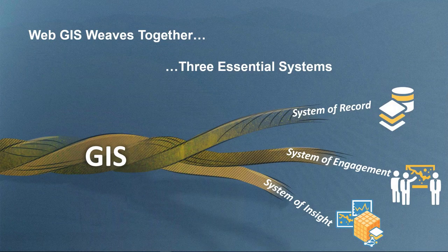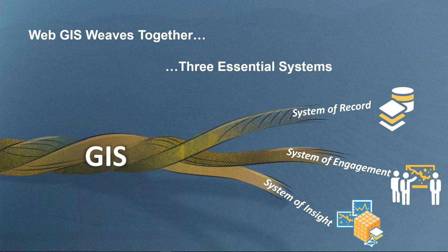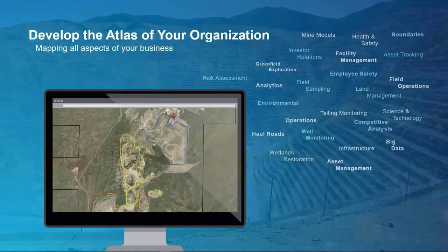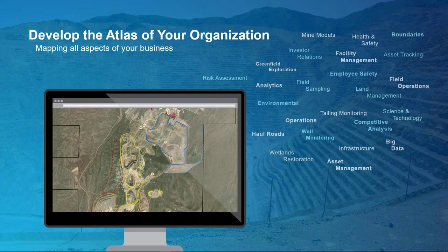This system works by providing three key components. First is a system of record, which is your authoritative data and information. Second is a system of engagement, which is how people actually discover data and easily make, share, and use maps. And then there's the system of insights — the concept of actually performing analysis as well as turning data into information that ultimately helps drive better operational decisions. With those three systems in place, all forms of geographic content can be used to develop the digital atlas of your organization.